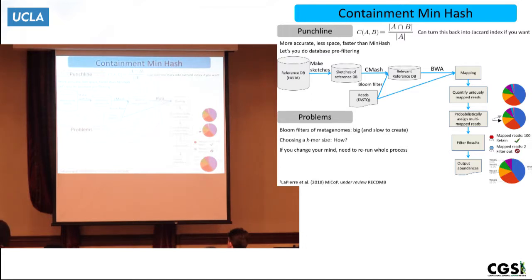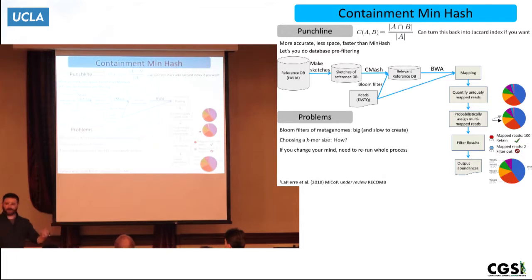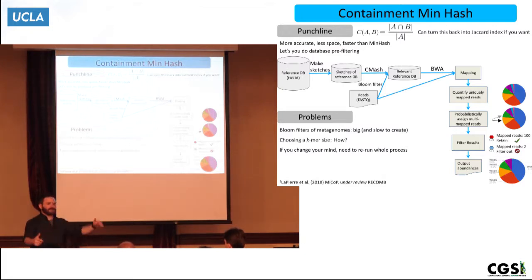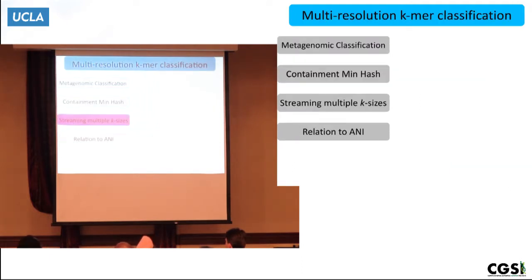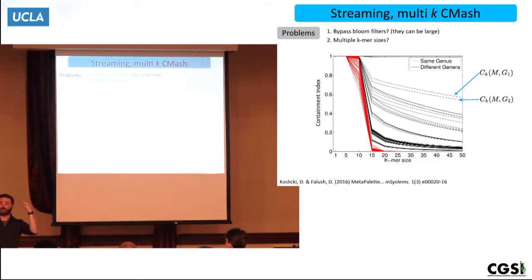If you've ever worked with metagenomic data, forming a bloom filter on a metagenome gives you a really big, slow-to-create data structure. If you change your mind and use a different K-mer size, you have to rerun the whole process. There are no good methods to figure out the right K-mer size — just a few rules of thumb — so you end up making lots of bloom filters, each tens to hundreds of gigabytes in size. Can we bypass bloom filters and do multiple K-mer sizes at once?